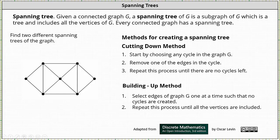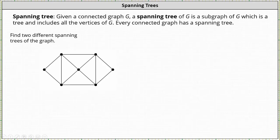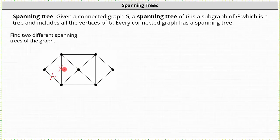We will now find two different spanning trees for the given graph using the cutting down method. We begin by identifying a cycle in the graph. For example, here on the left, there's a cycle among these three vertices — let's go ahead and remove this edge. Next, we have a cycle among these three vertices — let's remove this edge. We have a cycle among these three vertices — let's remove this edge. We have a cycle here at the top among these three vertices — let's remove this edge. We have a cycle here on the right among these three vertices — let's remove this edge.